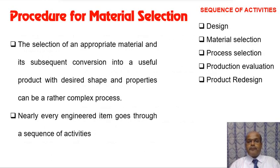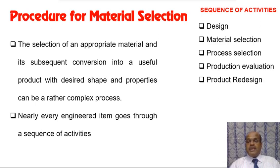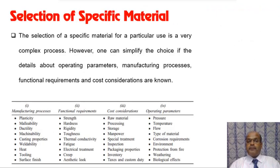The procedure for material selection — converting a material into a useful product with desired shape and size — can be a complex process requiring the experience of the material engineer. The sequence of activities includes design, material selection, process selection, product evaluation, and product redesign.